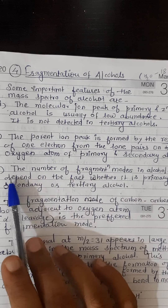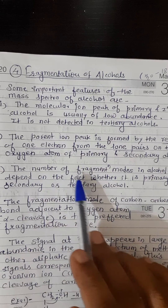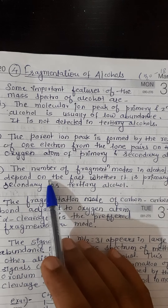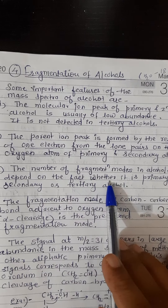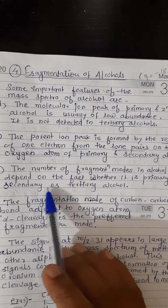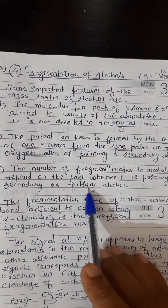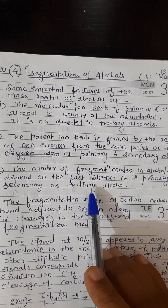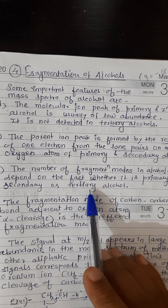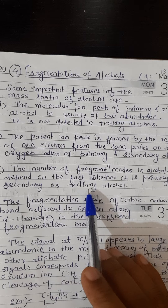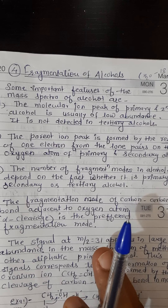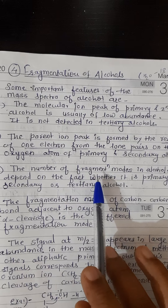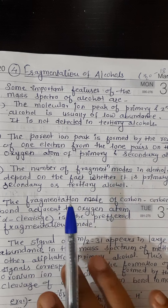The third point is that the number of fragmentation modes in alcohol depends on whether it is primary, secondary, or tertiary. This means when we perform fragmentation, we need to determine whether it is a primary, secondary, or tertiary alcohol — and on that basis the fragmentation mode is decided.